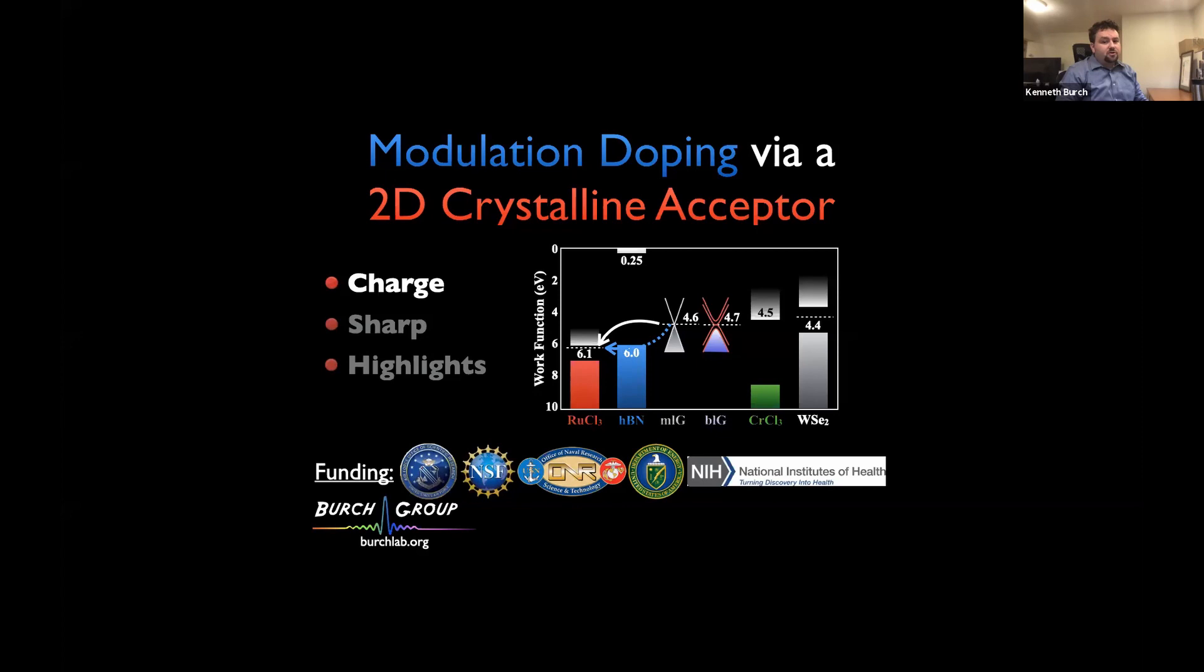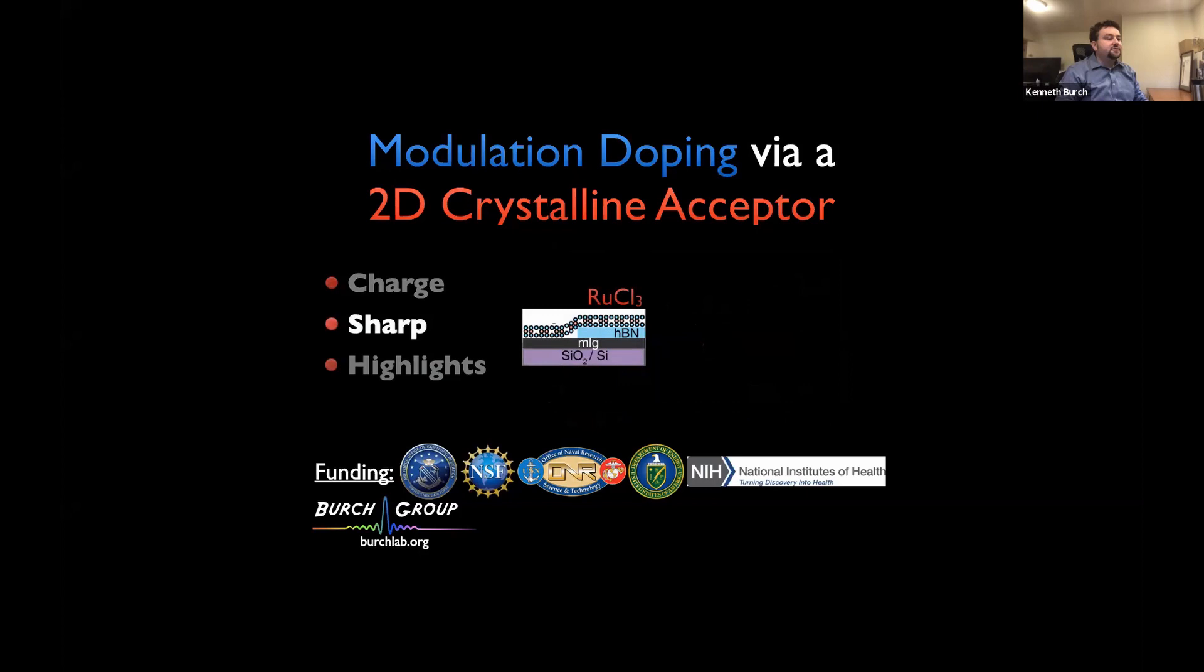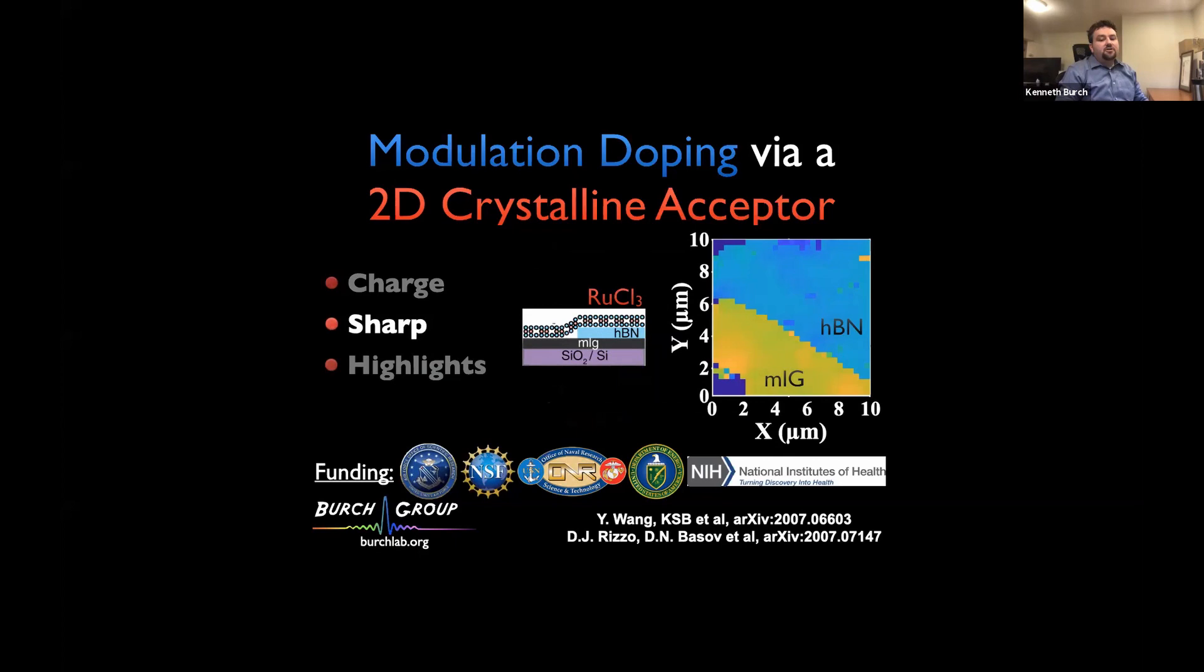If we really have this crystalline acceptor and it's really doing this modulation doping, a key question is how sharp are these dopant interfaces and can we really prove this in a contactless method. What we've done is create a variety of different heterostructures. I'm showing you a cartoon of one here. In this case, we put monolayer graphene and we drape ruthenium chloride on top, but we put HBN over part of the structure. Then we use Raman, in particular the G-peak, because it's well known that the G-peak position can measure the doping level in the material.